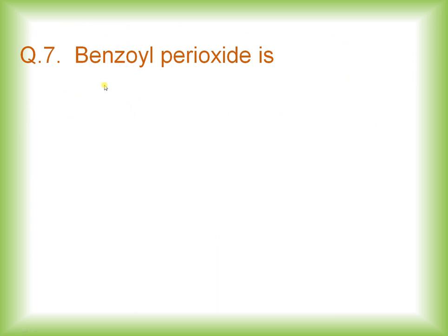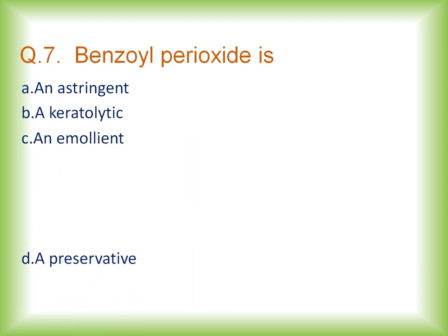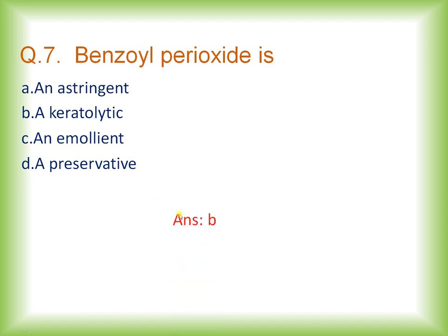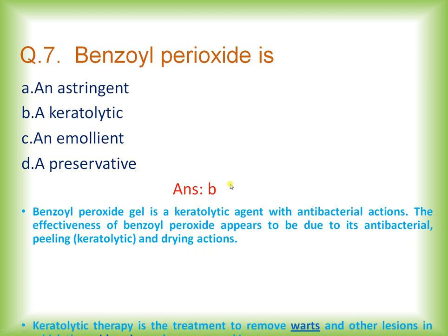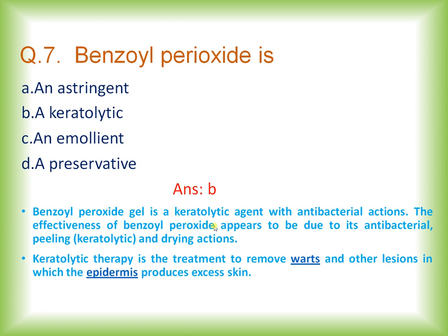Question number seven: benzoyl peroxide is used as — astringent, keratolytic, emollient, or preservative? The right answer is option B: benzoyl peroxide is used as a keratolytic agent. Benzoyl peroxide gel is used mainly as a keratolytic agent, which also has an antibacterial action.